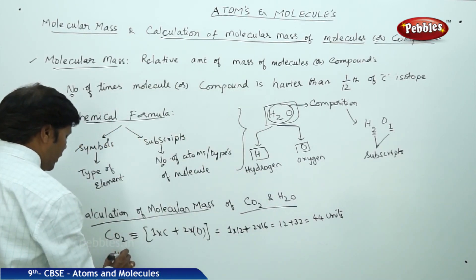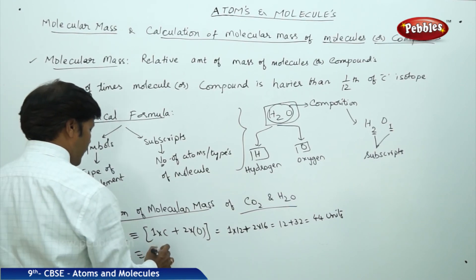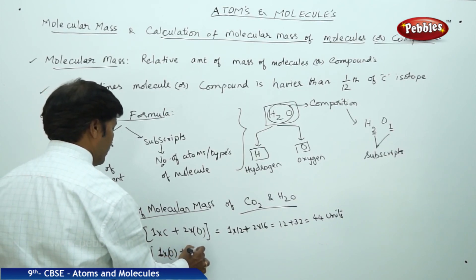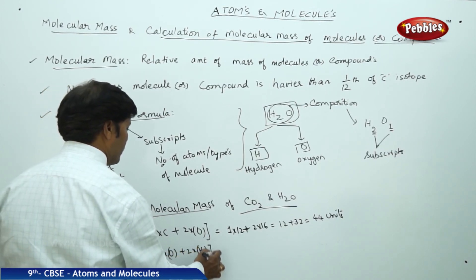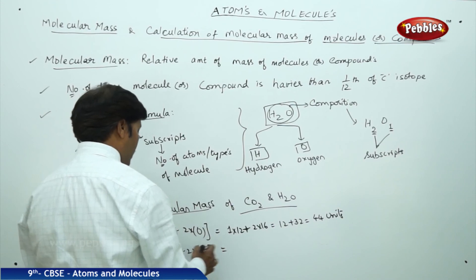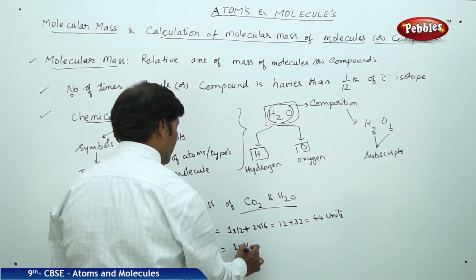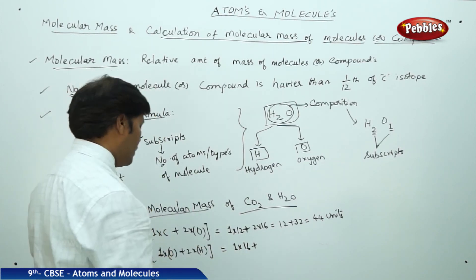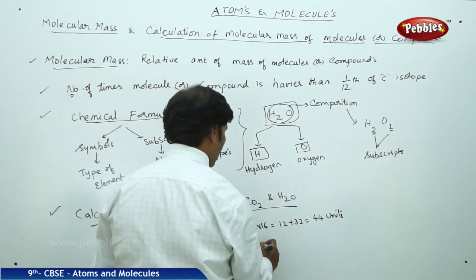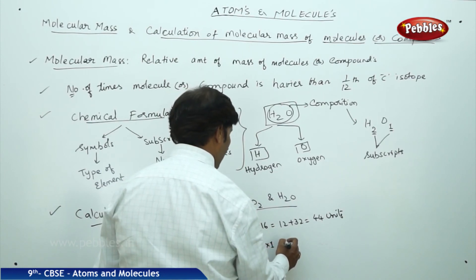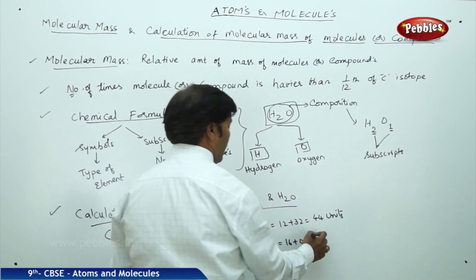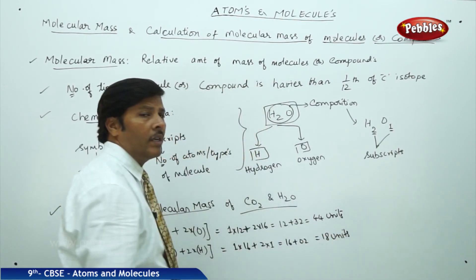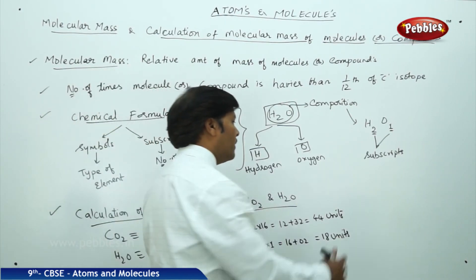Likewise, for H2O, it contains one oxygen and two hydrogen atoms. The atomic mass of one oxygen is 16 units, and one hydrogen atomic mass is 1 unit, so 2 into 1 equals 2. Therefore, 16 plus 2 equals 18 units is the molecular mass of water.